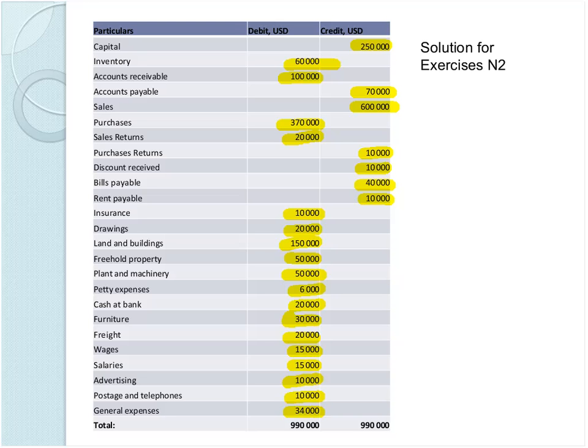After putting all the accounts on the right side, we got the equation between the debit and credit side. That means our trial balance is correct — we have done our accounts with the right solution. After the trial balance, we can prepare the balance sheet.